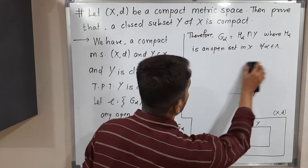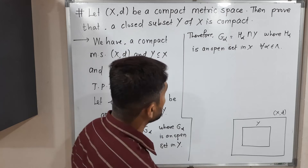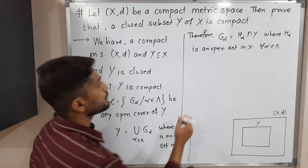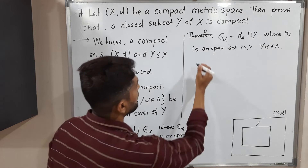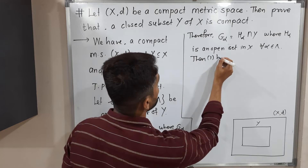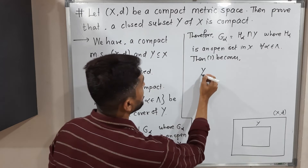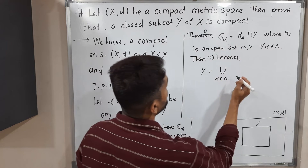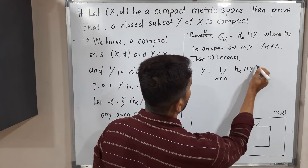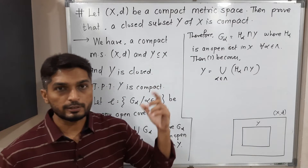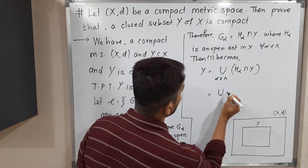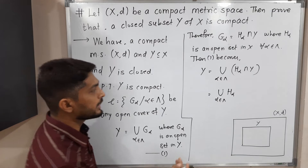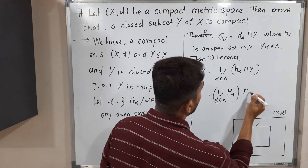So G_alpha is H_alpha intersection Y. So statement 1 — Y equals union over alpha in lambda of G_alpha — becomes Y equals union of (H_alpha intersection Y) for alpha in lambda. This equals (union of H_alpha) intersection Y, since Y is independent of alpha. So our left-hand side is Y equals (union H_alpha) intersection Y.